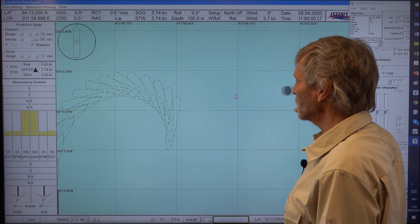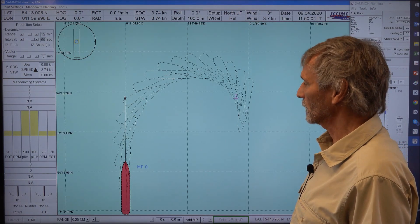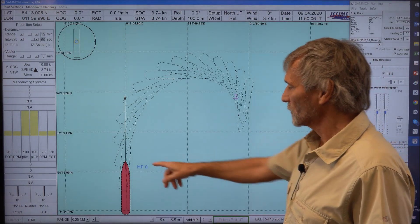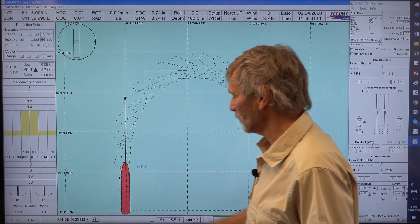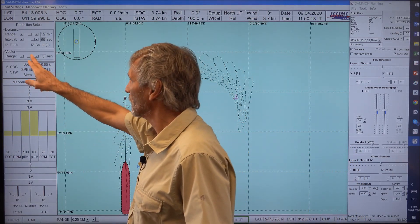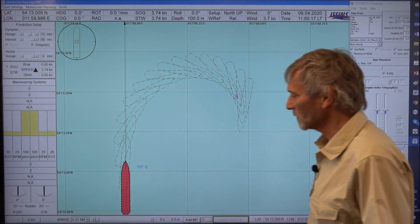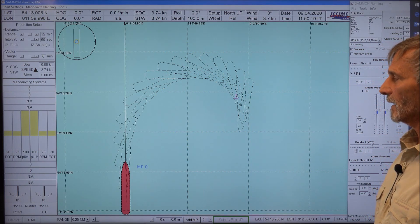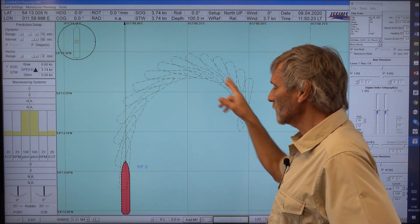So this is then our turning circle. And this is a speed vector, it's adjusted to 3 minutes, maybe we make it a little bit longer, to 6 minutes.